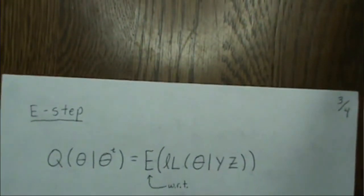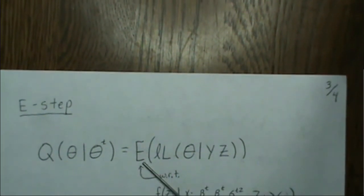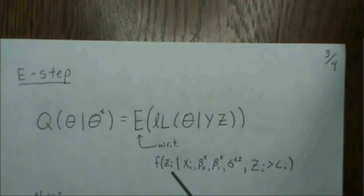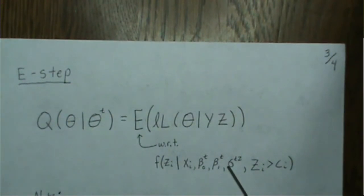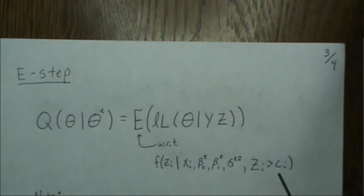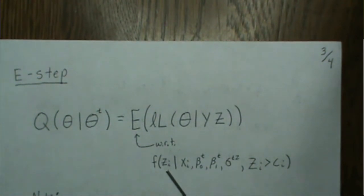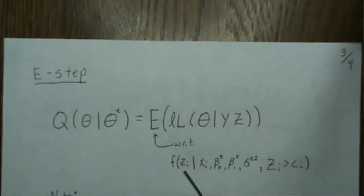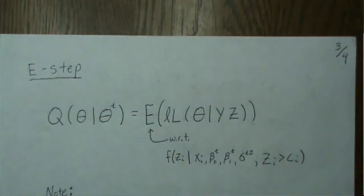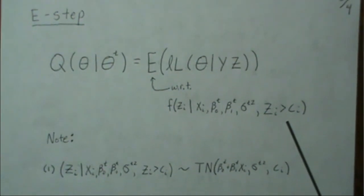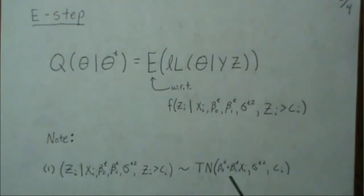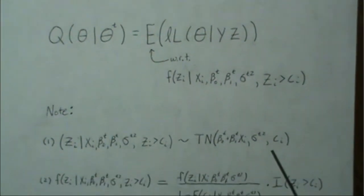Now let's look at the EM algorithm. We need to find the Q function, which is the expected value of the log-likelihood. The expectation is taken with respect to the missing data given the independent variable and current parameter estimates, along with the knowledge that zi is greater than ci. Since zi is normally distributed and is conditioned on being greater than ci, the distribution of zi given this information is a truncated normal distribution with a certain mean and variance, ranging from ci to infinity.